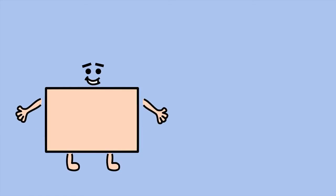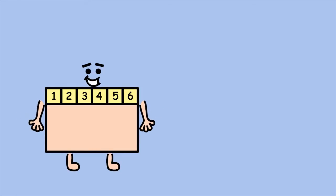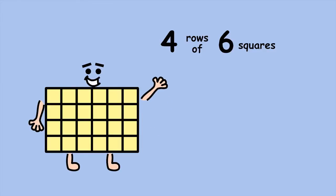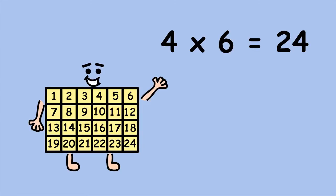If you know your times tables, there's an even quicker way of working out my area. We know each row has six squares. Now, how many rows are there? Four. Four groups of six, or four times six equals 24.